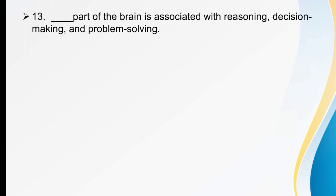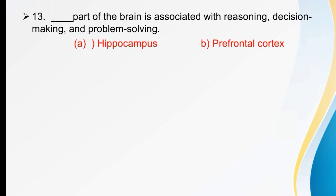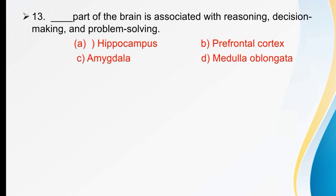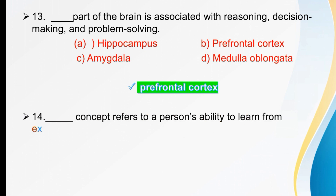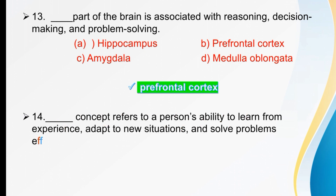Which part of the brain is associated with reasoning, decision-making, and problem-solving? Options are hippocampus, prefrontal cortex, amygdala, or medulla oblongata. The part of the brain associated with reasoning and decision-making is the prefrontal cortex. The right option is B.